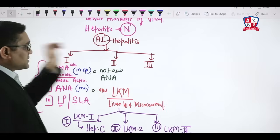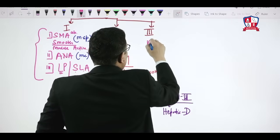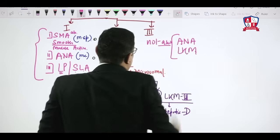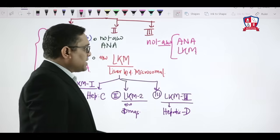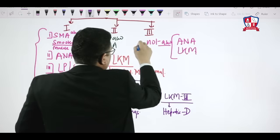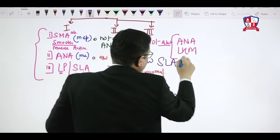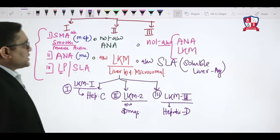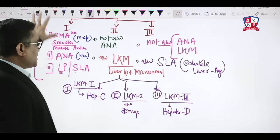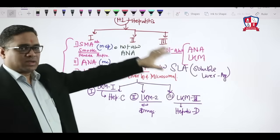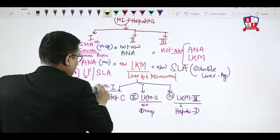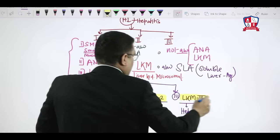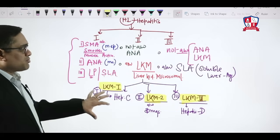Type 3 autoimmune hepatitis is not associated with anti-nuclear antibodies or LKM antibodies. Instead, it is characterized by association with soluble liver antigen antibodies. These are the important points about type 3 autoimmune hepatitis.